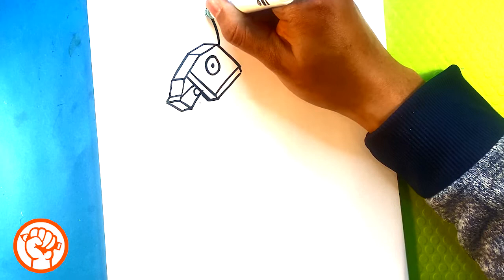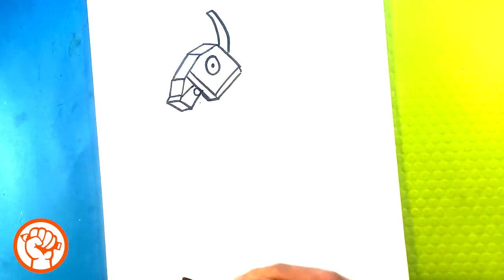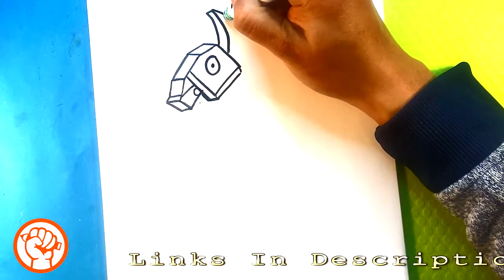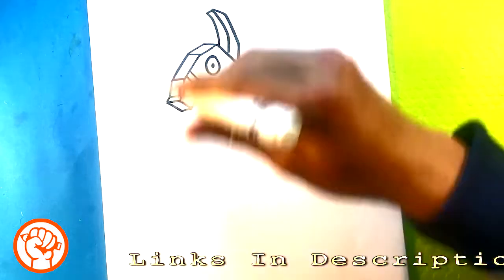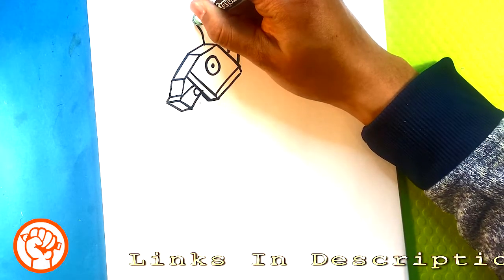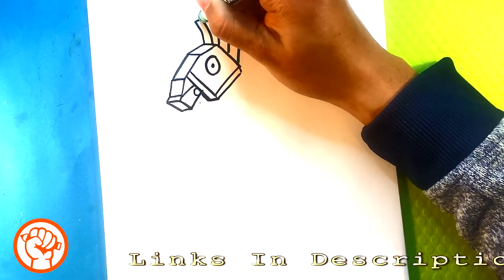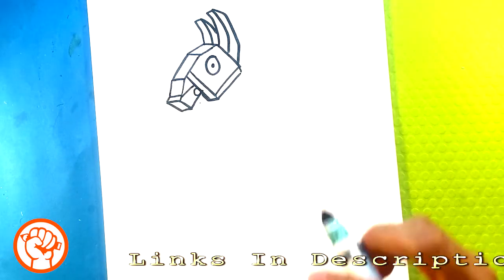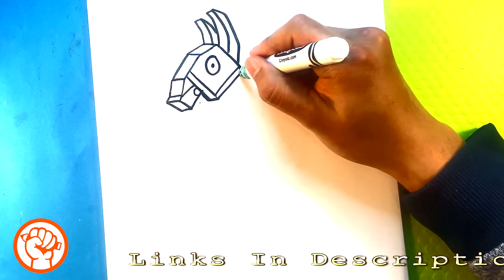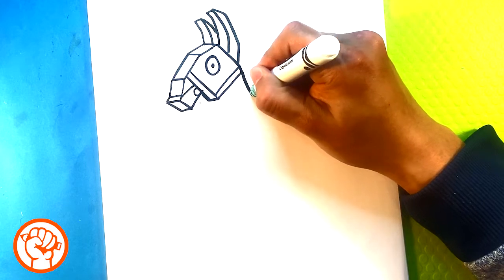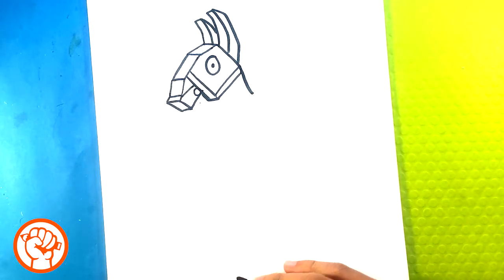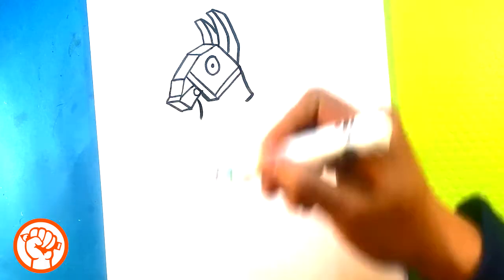I'm going to draw the ears here. The ears kind of go up like rabbit ears. Curve back, in, curve in here, in.